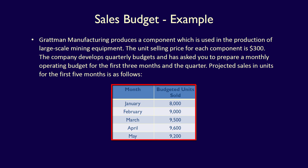January: 8,000 units. February: 9,000 units. March: 9,500 units. April: 9,600 units. May: 9,200 units.